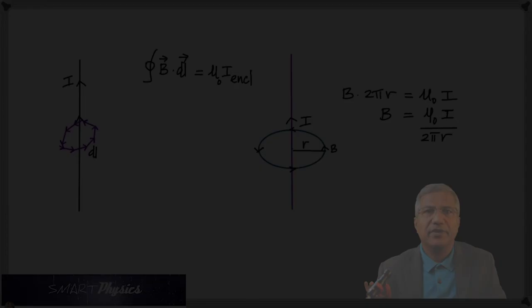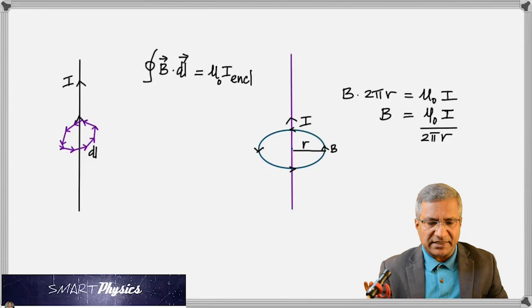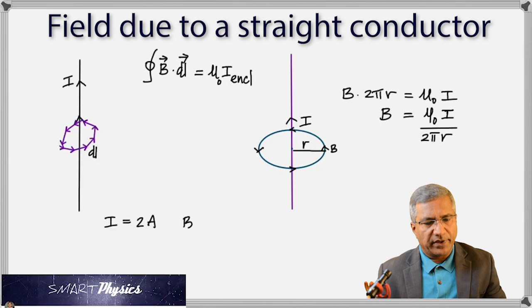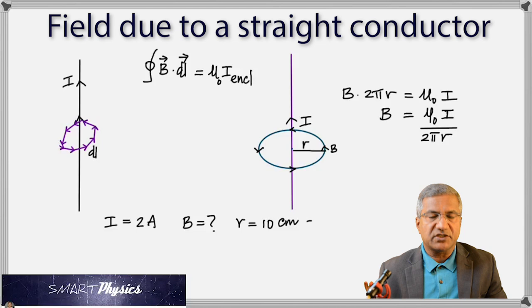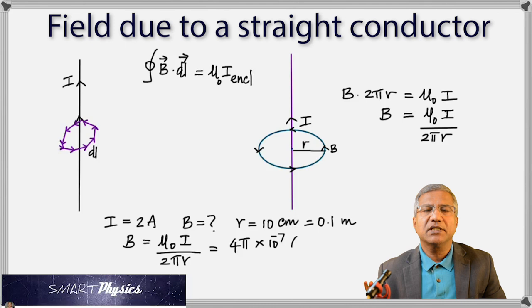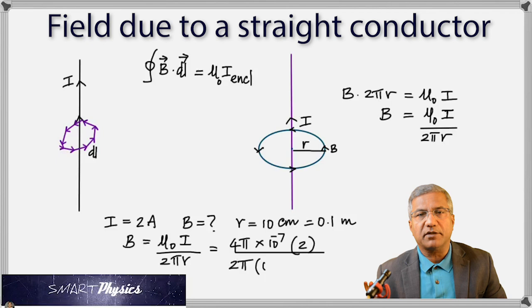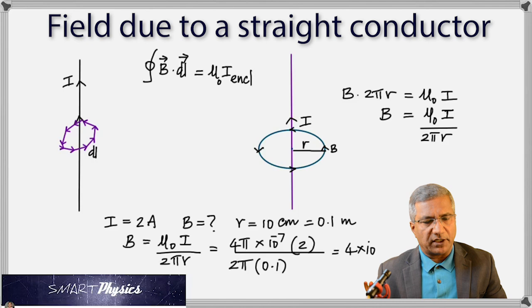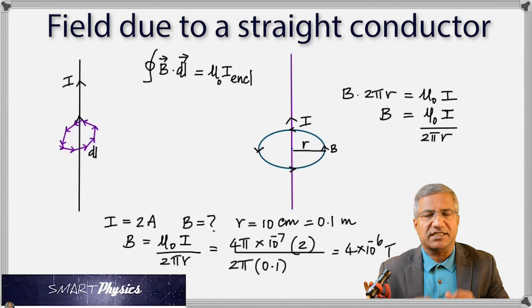Here is a simple example. The current is 2 amperes and we're calculating the magnetic field at a point 10 centimeters (0.1 meter) away from the conductor. Plugging into the formula: μ₀ = 4π×10⁻⁷, so B = (4π×10⁻⁷ × 2)/(2π × 0.1) = 4×10⁻⁶ tesla. That's how we calculate the magnetic field at any point away from a straight conductor.